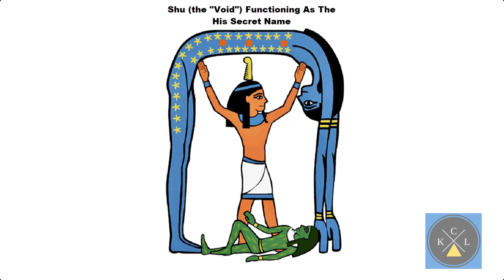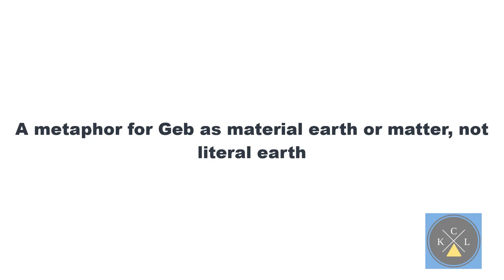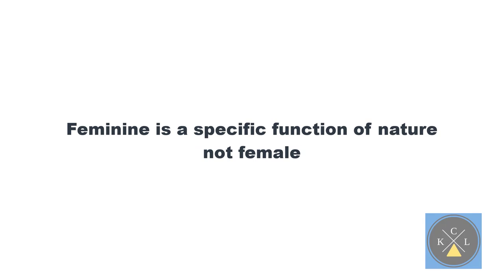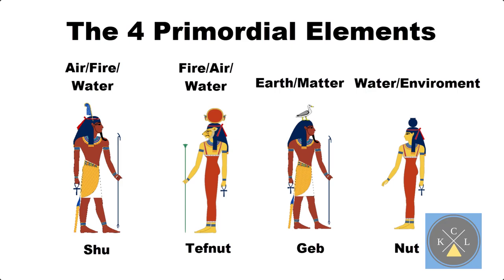Chapter 1 verse 6 and then 9 explains the science I just expressed. Verse 9 states: let the water under the sky be gathered into one place and let the dry ground appear. This is Geb being expressed as material or matter, not literal earth. An interesting side note is that Geb equates to Joseph, the earthly father of Jesus in the Bible. All feminine natures like Nut become the environment that any part of nature is formed within — Nut becomes the sky that contains the stars and the planets, not just earth. That's why she's called the goddess of the sky.